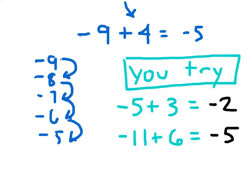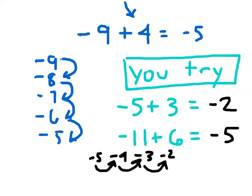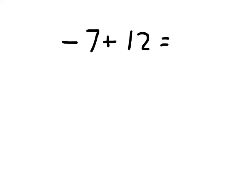Hopefully you did. If you didn't, we'll continue to work with this. Negative 5 plus 3: starting at negative 5, we count up — negative 4, negative 3, and negative 2. That's moving to the right 3 places: 1, 2, and 3.